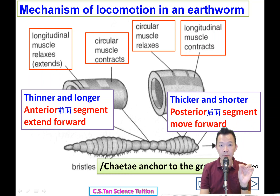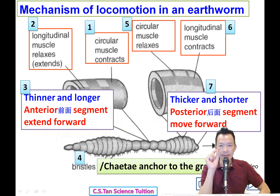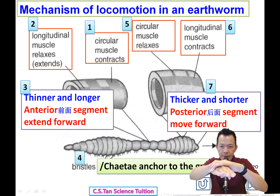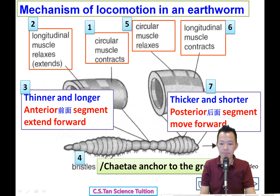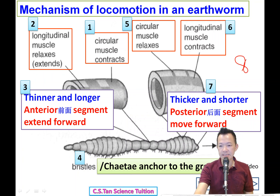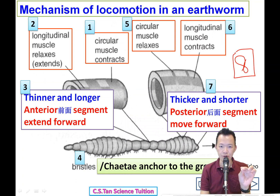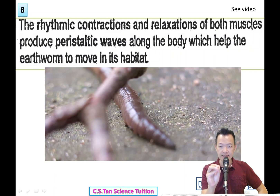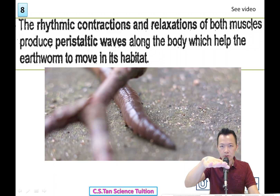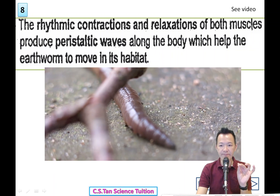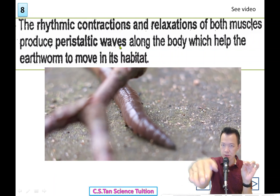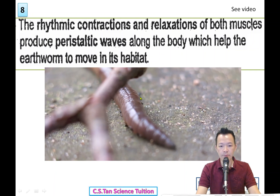You should write down the numbered sentences to form your answer. The circular muscle contracts, the body becomes longer and thinner, the setae anchor in front, then the circular muscle relaxes, the body becomes thicker and shorter, and the posterior is pulled forward. The alternating contraction and relaxation of both muscles produces a peristaltic wave that helps the earthworm move on its habitat.